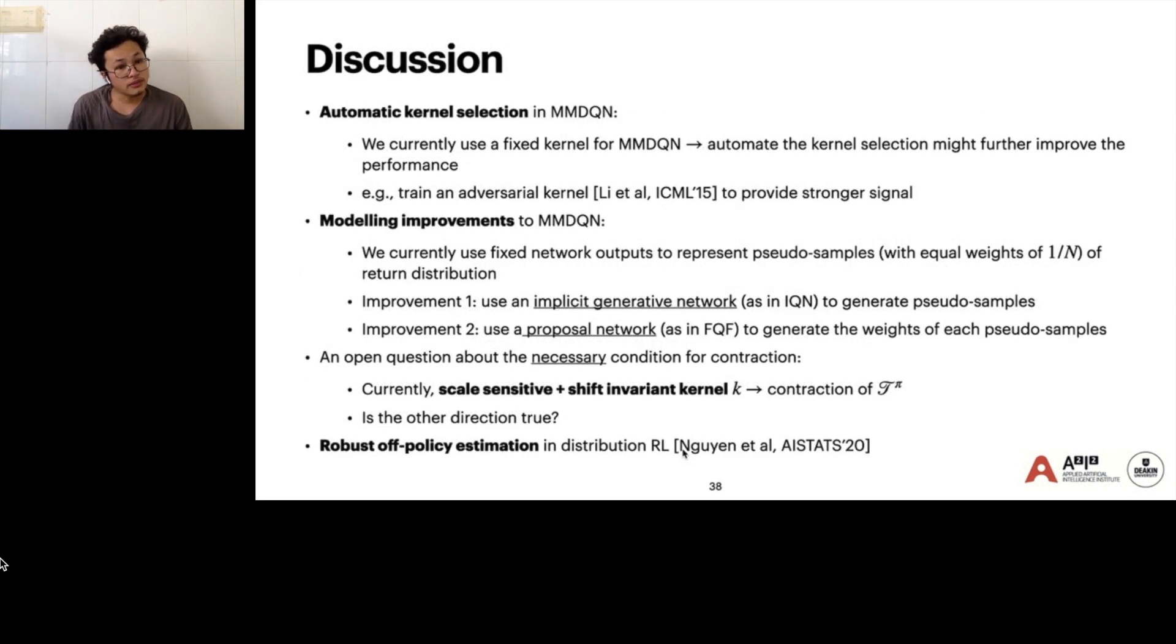There are some ways to improve the performance further in our framework. First is automatic kernel selection. Currently we use fixed kernel for MMDQN, but we can use adversarial kernels to provide stronger signals for training. We can include modeling improvements through MMDQN using the implicit generative network from IQN or using proposal network from FQF. There's an open question about the necessary conditions for contraction, whether scalability, scale-sensitivity, and shift-invariant kernel is necessary for the contraction of distributional Bellman operator. We can extend this work to the policy estimation case.